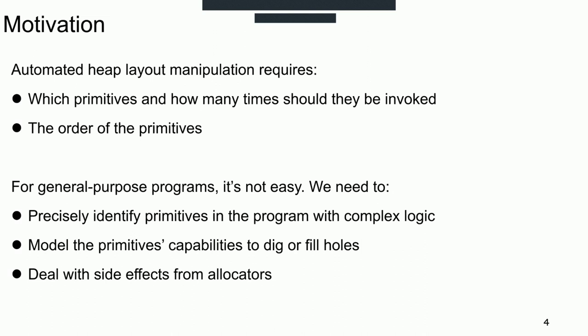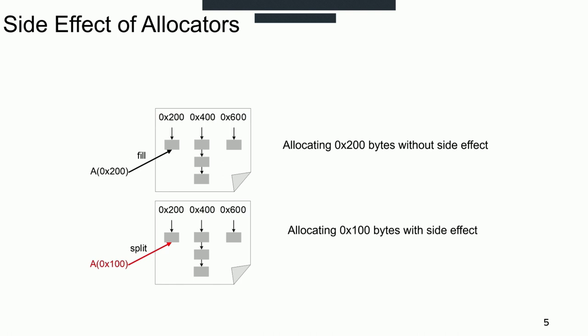Finally, it is important to deal with side effects. The side effects during manipulation result from the design of allocators, which means that the same heap operation may lead to different results in different heap states. We use these two pictures to illustrate the side effects. In the above picture, allocating hex 200 bytes chunk will occupy one hole of the chain without side effects, but sometimes allocating hex 100 bytes chunk could also consume a hole from the chain. This situation is regarded as side effects.